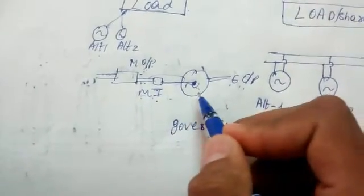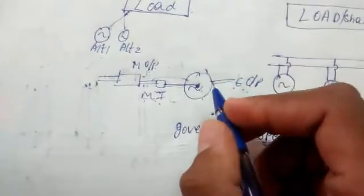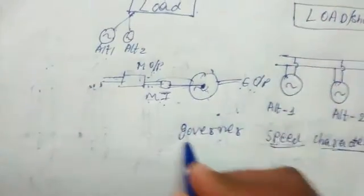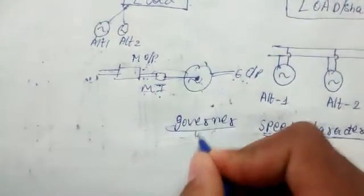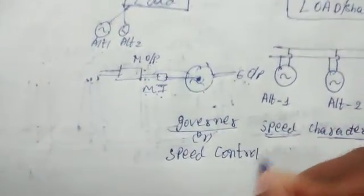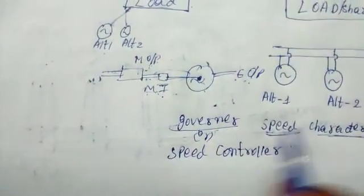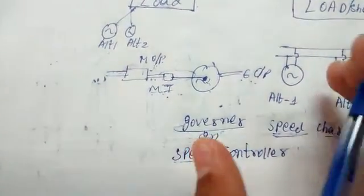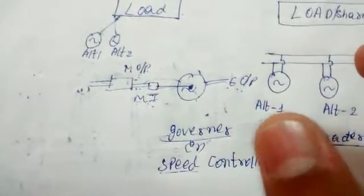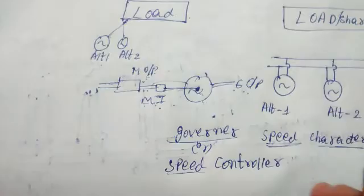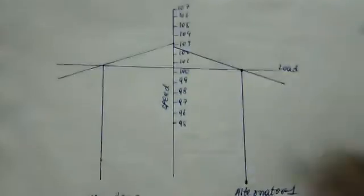The speed of the alternator is controlled by a speed controller device. This speed has an effect on the load sharing. The speed of load sharing will affect the load sharing. We will use a graph to analyze this. This is the speed analysis graph.